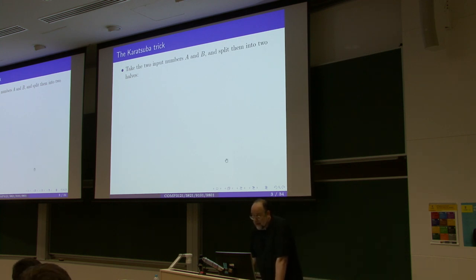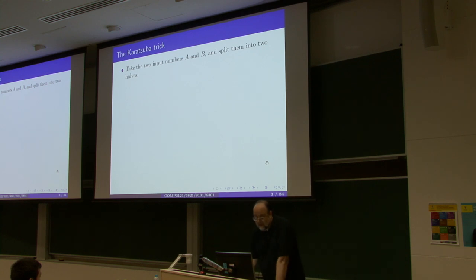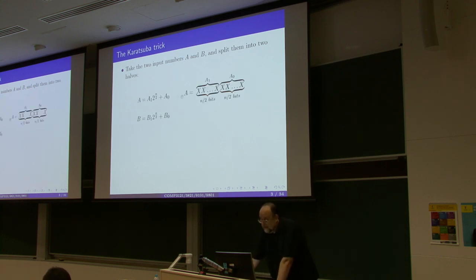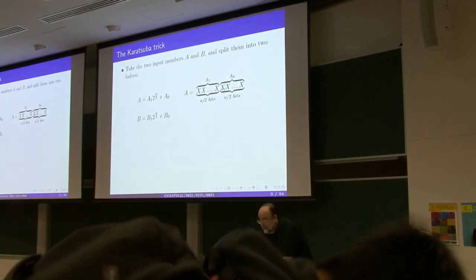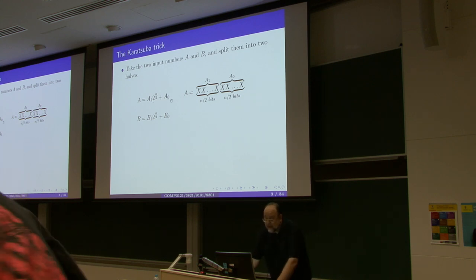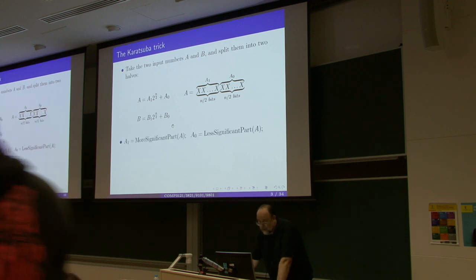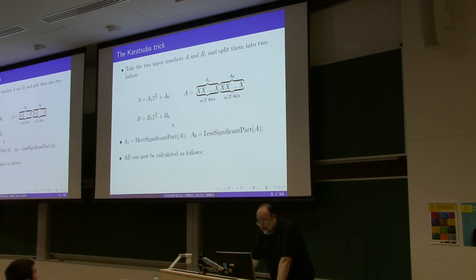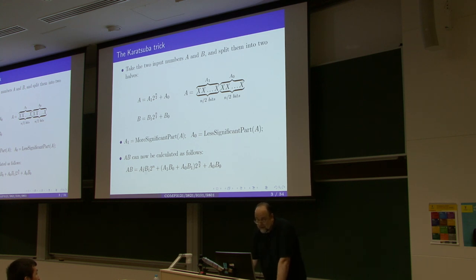We showed how Karatsuba multiplied large numbers in a faster way. He split a large integer into two approximately equal halves — the most significant part and the less significant part. Number a can be represented as the more significant part shifted n/2 many bits to the left plus a₀, and similarly for b.